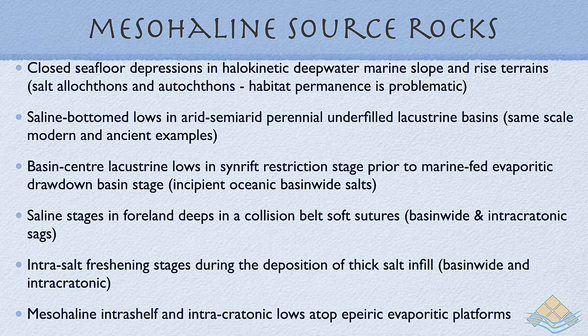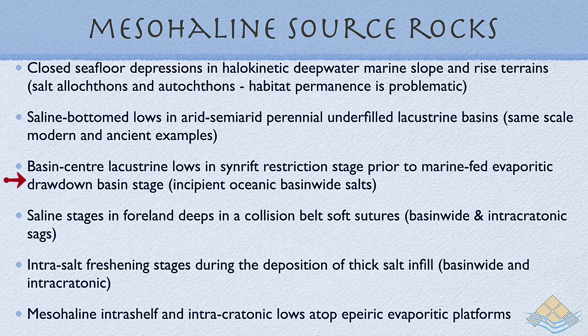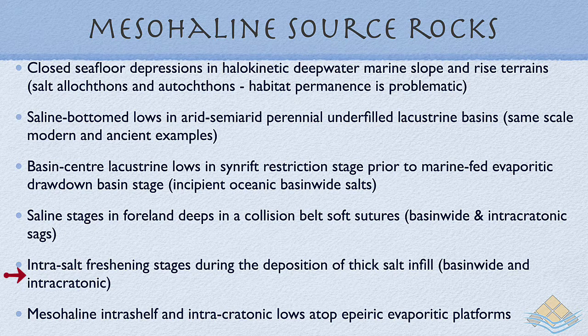The other four examples of mesohaline source rocks are all cases where we do not see same-scale modern and ancient counterparts. They encompass basin-center lacustrine sumps in opening syn-rift restricted phase successions with a subsea-level base and marine-fed evaporative drawdown hydrology, typifying incipient oceanic basin-wide salts; subsea-level fall and deep marine-fed collision belt basins with both basin-wide and intracratonic associations; intrasalt freshening stages during saline giant infill; and platform mesohaline intrashelf and intracratonic lows atop relatively shallow-water evaporitic shelves — this latter setting typifying much of the source rock deposition in the Mesozoic of the Middle East.